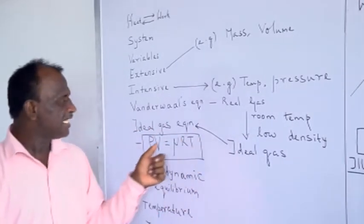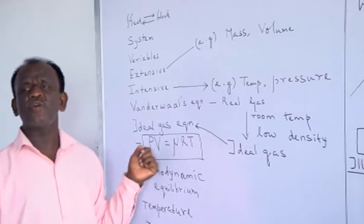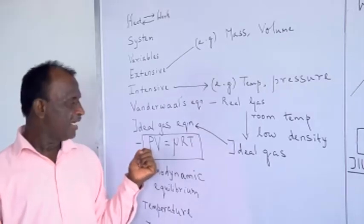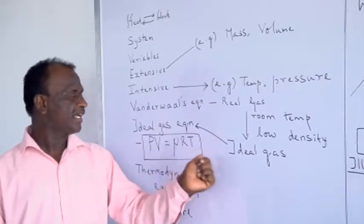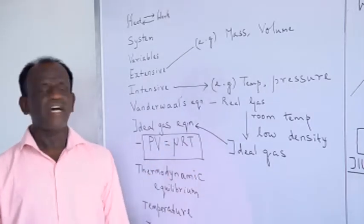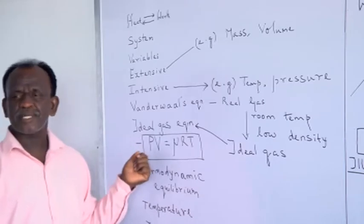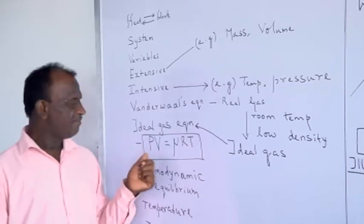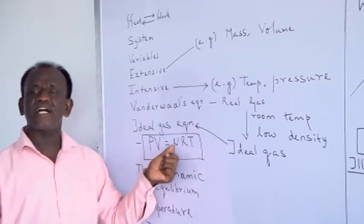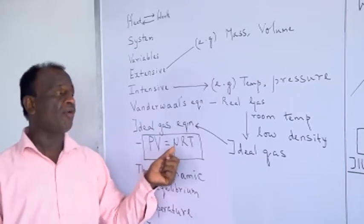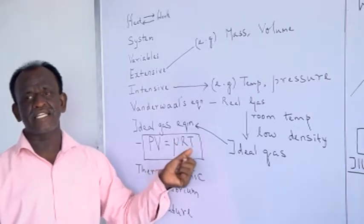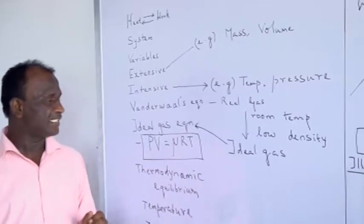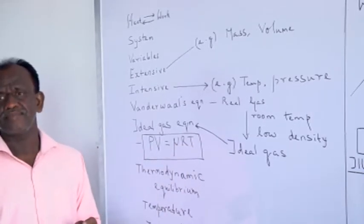The ideal gas equation is PV = μRT, where P is the pressure of the gas, V is the volume, μ is the number of moles, R is the gas constant, and T is the temperature.